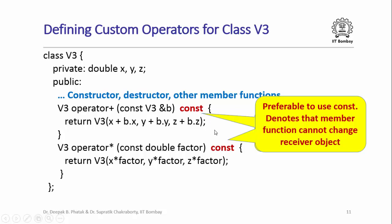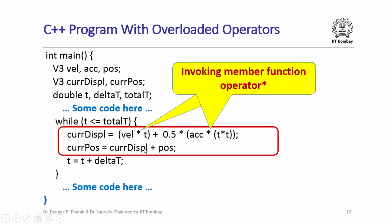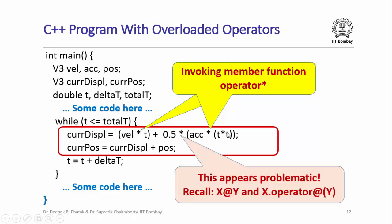It is important to note that these member functions are not going to change the receiver object, and it is very important to denote this explicitly by writing const after the parameter list and before the opening brace. Looking back at our motion simulator code, these two star operations are handled by V3's member function operator* applied on t and acceleration applied on t squared.